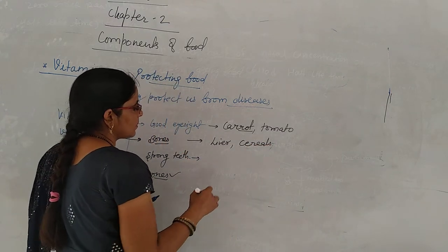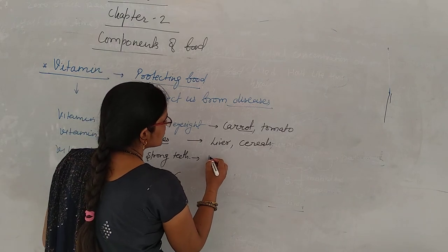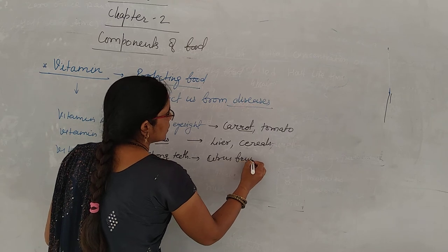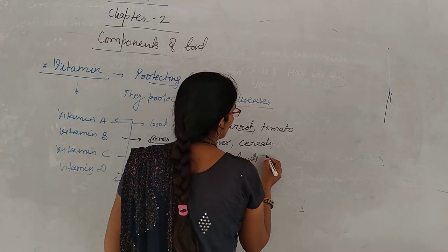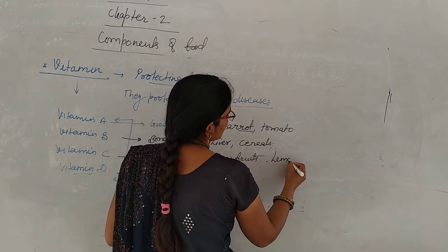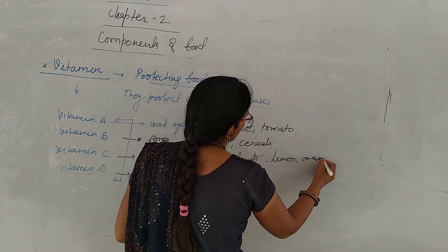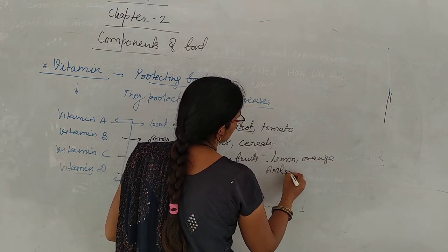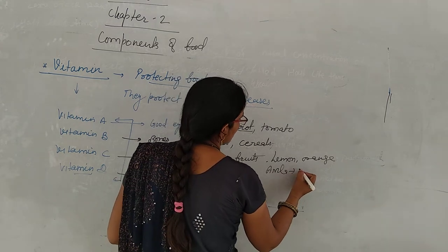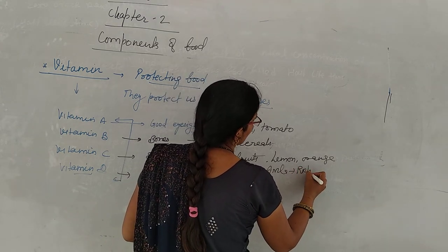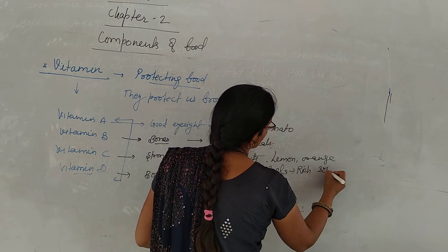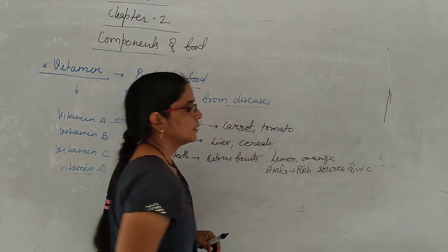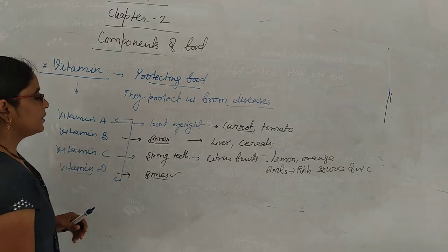Strong teeth. If you don't eat vitamin C, it's all in the citrus fruits. Citrus fruits which are different, like lemon, orange, and especially amla. This is the root source of vitamin C. Is that clear?